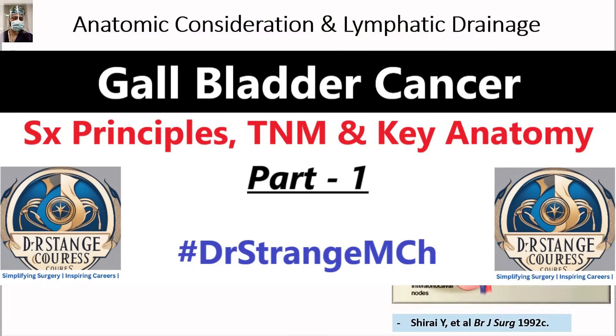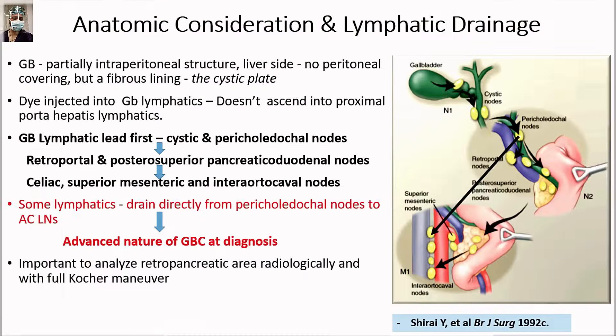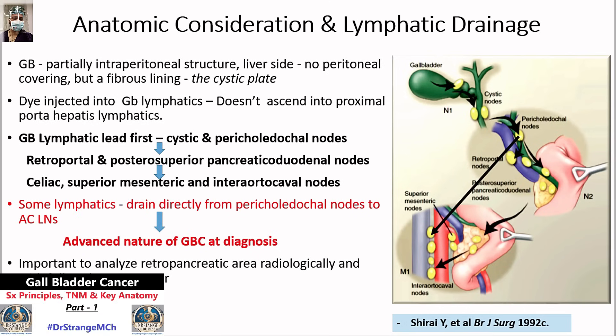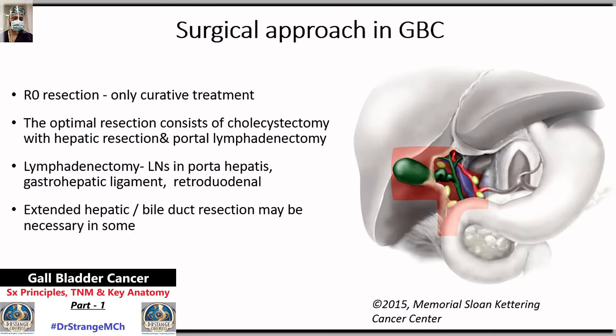As you can see from the pericholedochal lymph nodes, there is a direct arrow which can go directly to the aortocaval lymph nodes. That's why sometimes there are skip metastases and there is direct involvement of aortocaval lymph nodes. The involvement of aortocaval lymph nodes makes it an M1 disease. The lymphadenectomy includes porta hepatis, gastro-hepatic ligament, and retroduodenal — those are the regional lymph nodes taken out. We always sample the aortocaval lymph nodes before proceeding for major surgery.